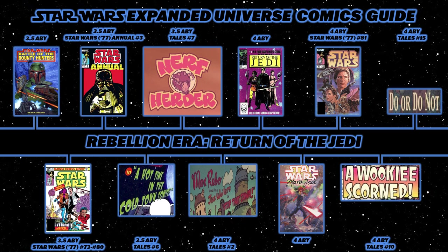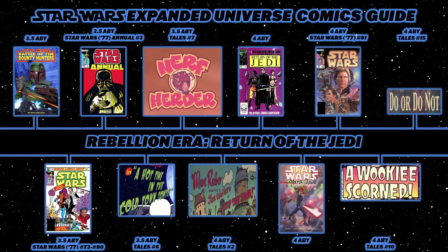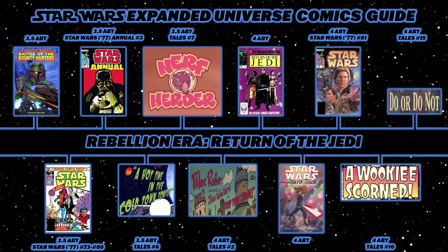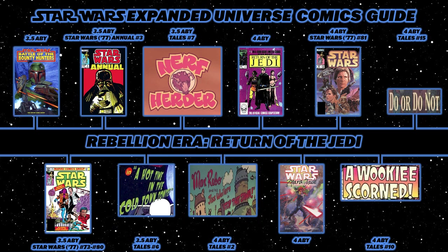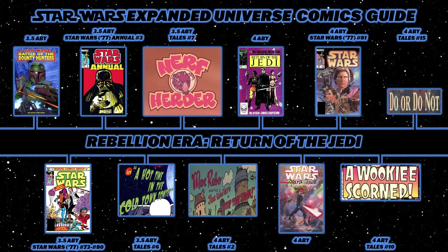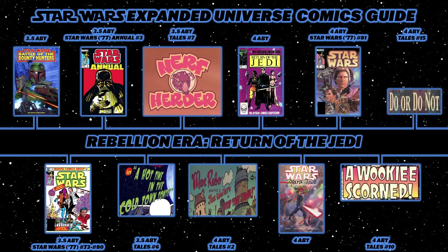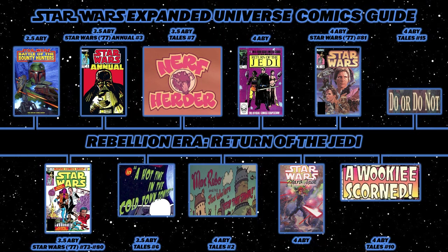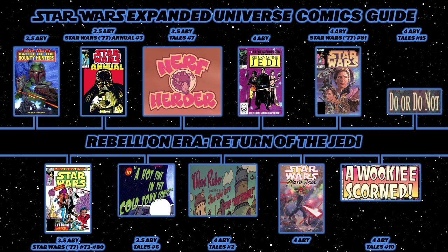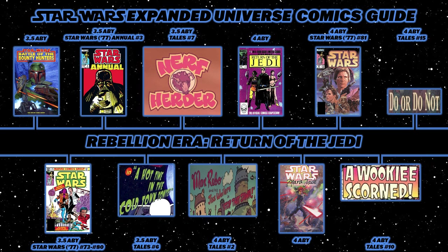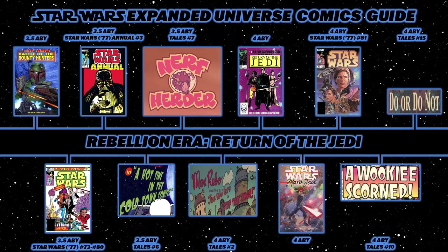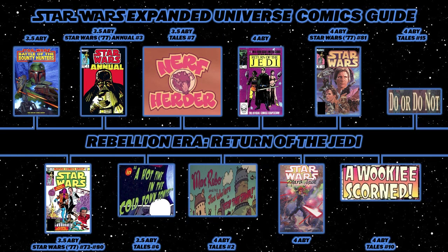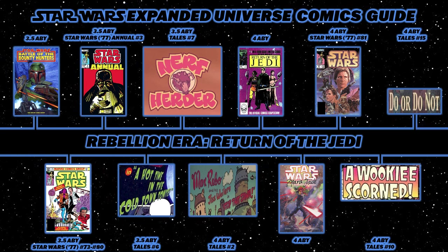Back to Marvel 1977, creeping closer to Return of the Jedi: issues 73 through 80. Then the third annual of the Star Wars 1977 series. Then back to Star Wars Tales: A Hot Time in the Cold Town from issue 6, Nerf Herder from issue 7, and Stop That Jawa from issue 2, starring Max Rebo and his Jizz Wailers.